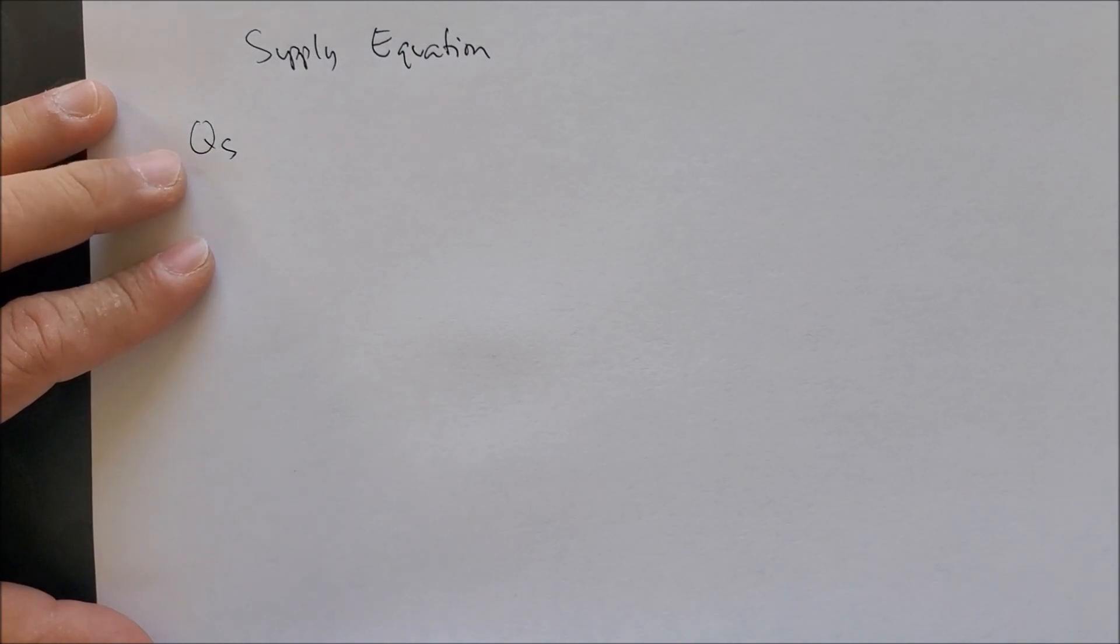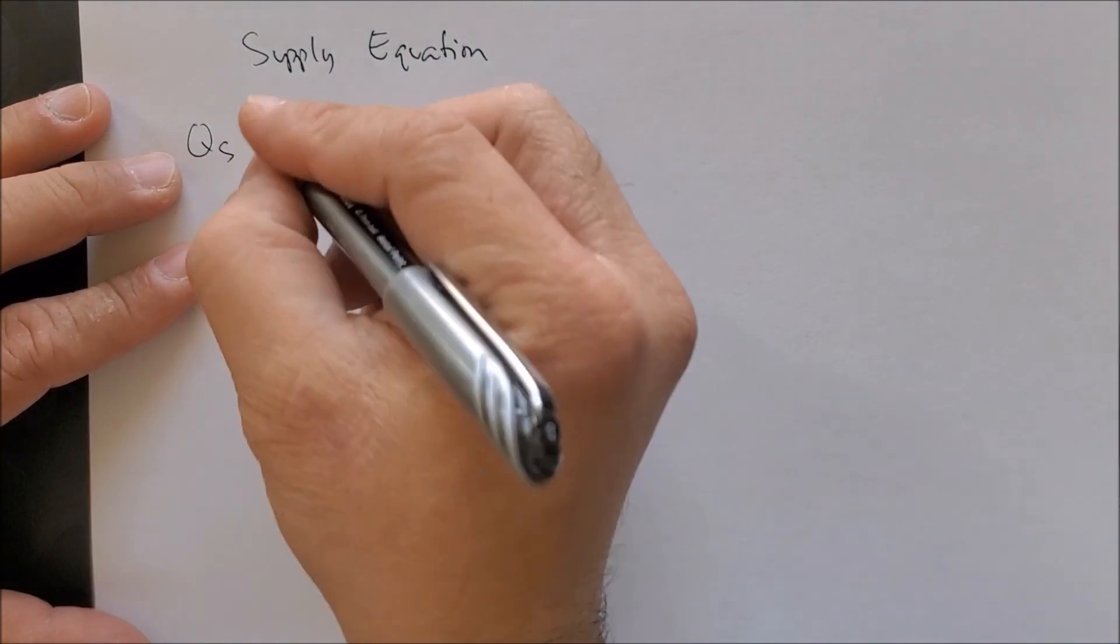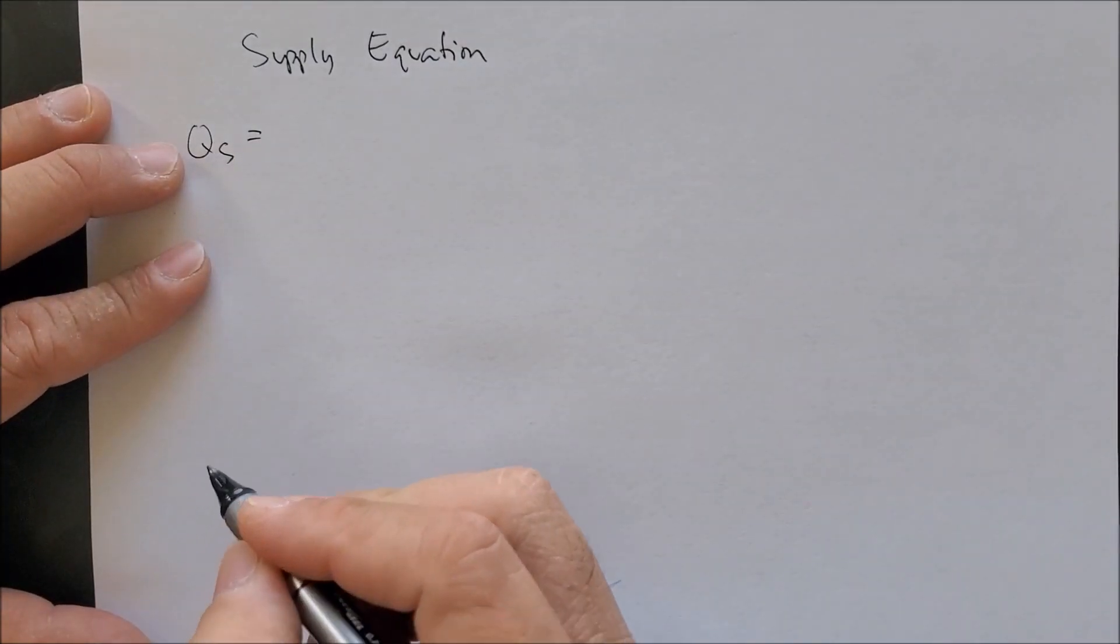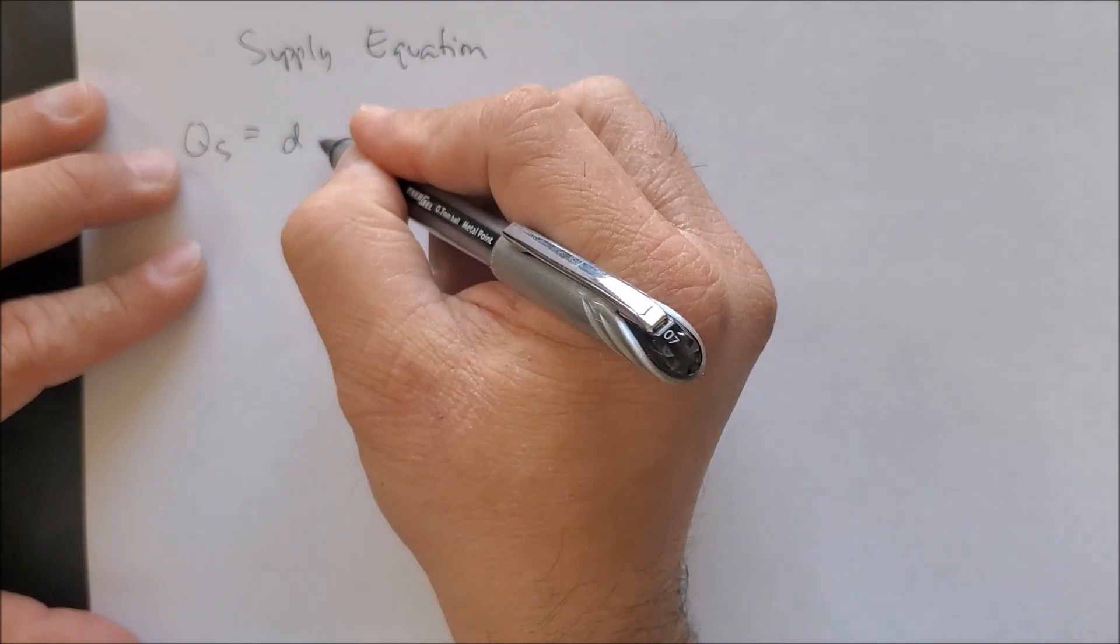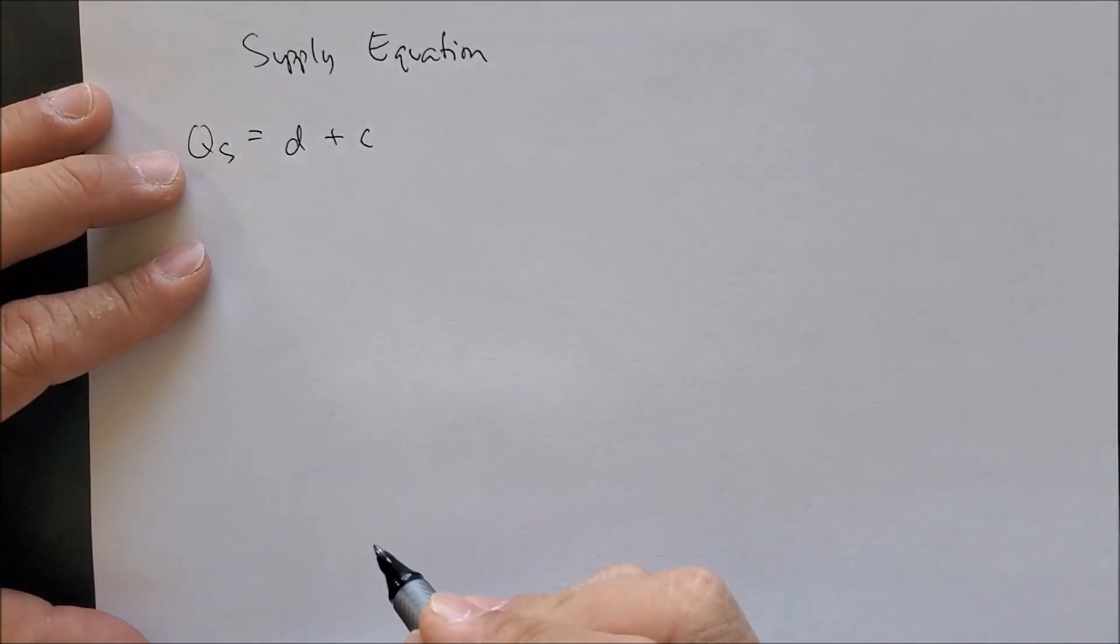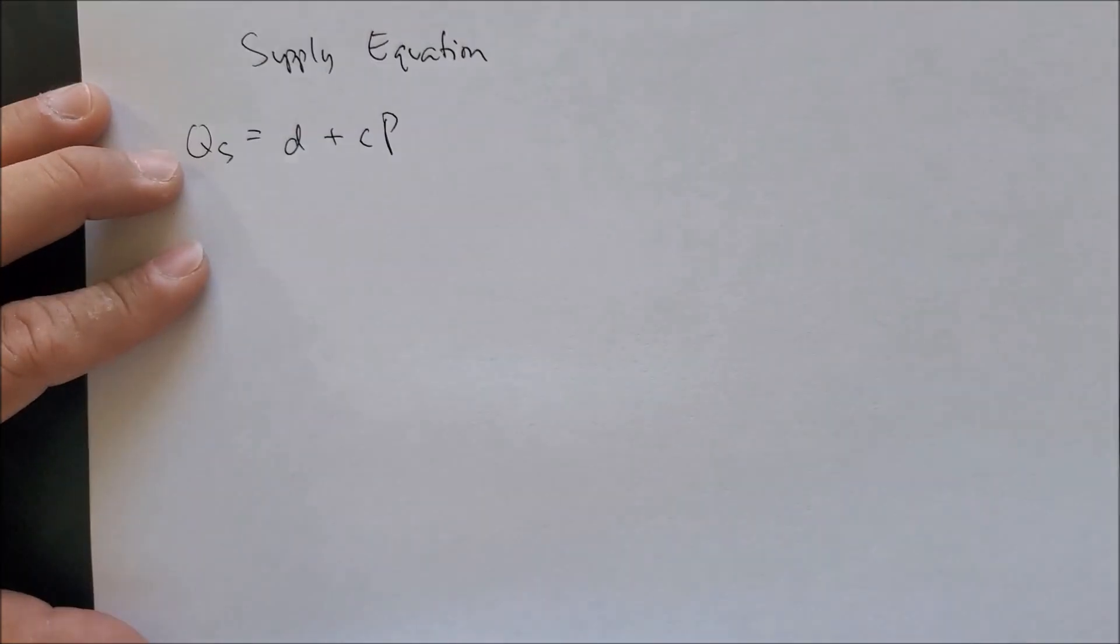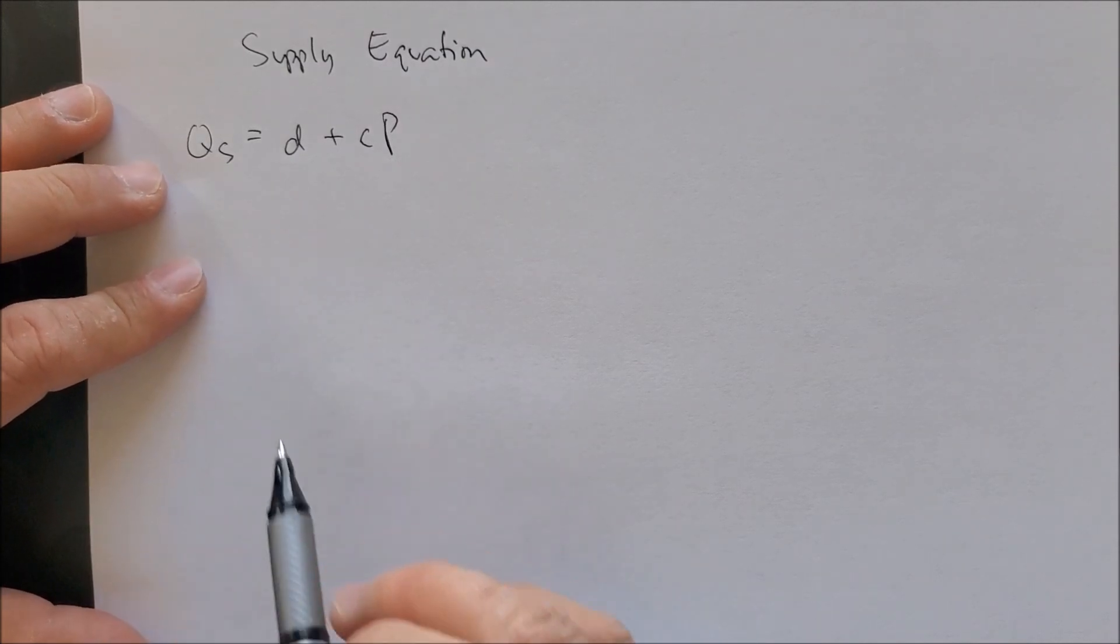But now it's from the perspective of the producer. For the supply curve, we have Q sub s as a function of d, the x-intercept, plus the inverse slope of P. Here is what we call our supply equation.